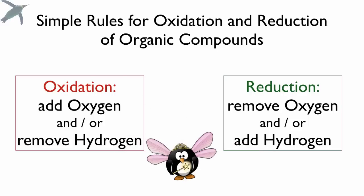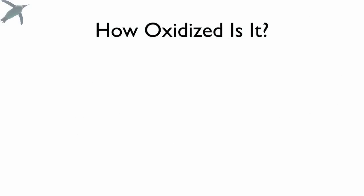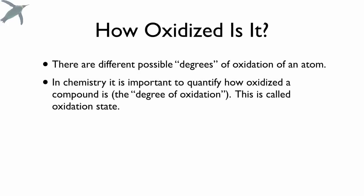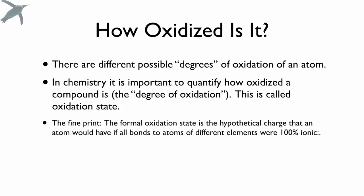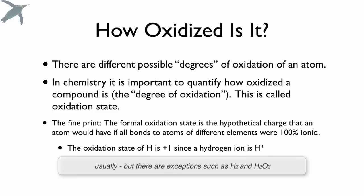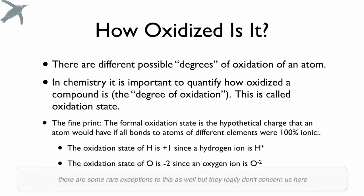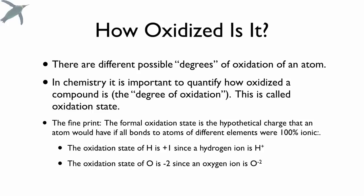How oxidized a compound is — that's where it starts to get a little bit confusing. There are different levels or degrees of oxidation, and we refer to this as an oxidation state. The oxidation state is a hypothetical charge that an atom would have if all the bonds to atoms of different elements were 100% ionic. The oxidation state of hydrogen is +1, since a hydrogen ion is H+. The oxidation state of oxygen is -2, since an oxygen ion is O2-. For our purposes, these are the only oxidation states we have to worry about in order to look at what carbon is doing.